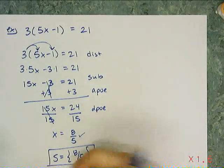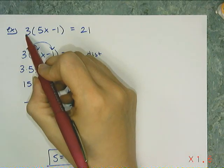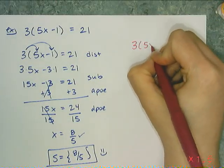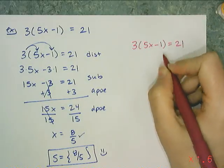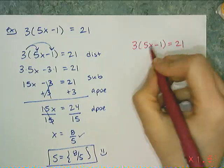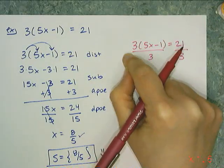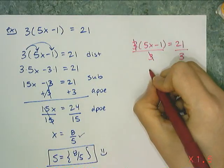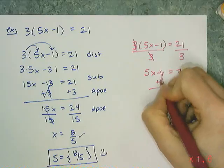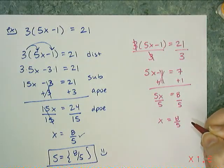There's another way to see this problem when it's just distribution on one side. This is really 3 times some quantity that happens to be 5x minus 1. Instead of distributing to remove the parentheses, I can use the division property and divide both sides by 3. The 3s cancel, leaving 5x minus 1 equals 7. Then I add 1 to both sides to get 5x equals 8, divide by 5, and get x equals 8 fifths — the exact same answer, but in fewer steps.